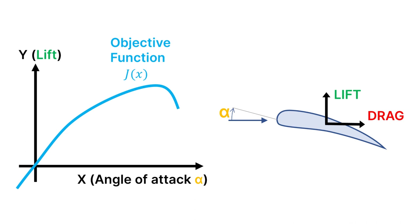We do this by changing the input variable x, which could be the angle of attack of that same airfoil. The relationship between x and y can be expressed through a mathematical function, which we can call our objective function.